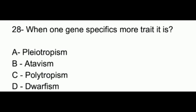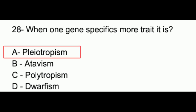Question number 28. When one gene specifies more than one trait, it is: option A, pleiotropy; option B, atavism; option C, polytropism; option D, dwarfism. The answer to this question is option A, which is pleiotropy.